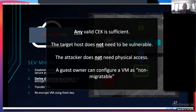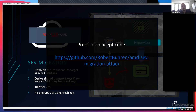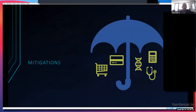The only thing a guest owner can really do is mark their virtual machine as non-migratable, so with SEV it's possible to instantiate a virtual machine in a way that it is never migrated — then the whole migration process will never happen. But of course you lose some capabilities of the cloud system. There is proof-of-concept code on my GitHub with scripts that demonstrate the migration attack. In our paper, we proposed some mitigations to the way the SEV remote attestation feature works.